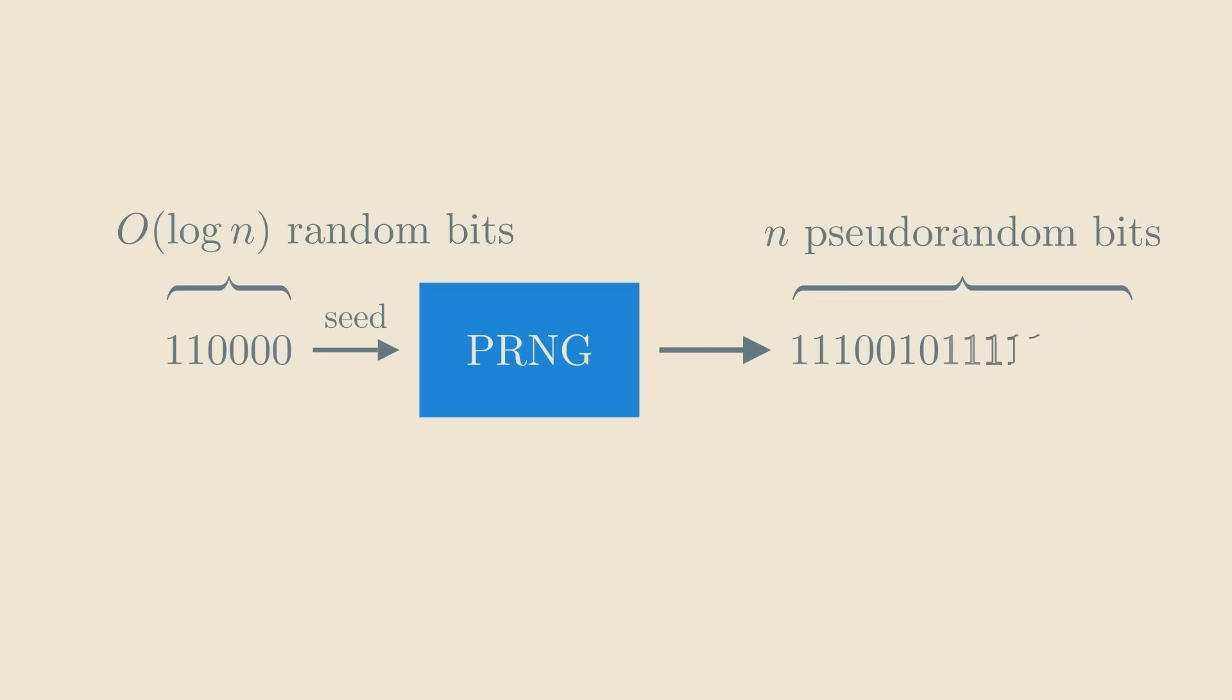For different seeds, the output is different, but it's a deterministic function, meaning for the same seed we'll always get the same bits.